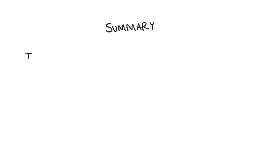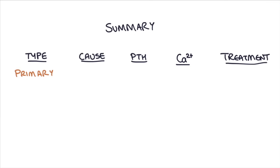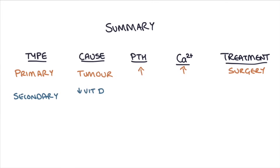To summarise: primary hyperparathyroidism is caused by a tumour of the parathyroid glands. It causes a high parathyroid hormone that leads to a high serum calcium, and the treatment is surgery. Secondary hyperparathyroidism is caused by a deficiency in vitamin D or chronic kidney disease. The parathyroid hormone level will be high, but the serum calcium level will be low or normal, and the treatment is to improve the vitamin D deficiency or to do a renal transplant in chronic kidney disease.